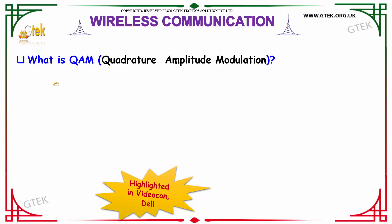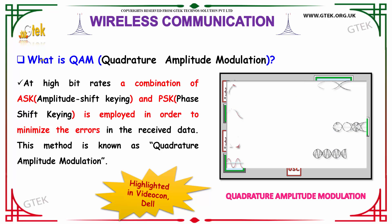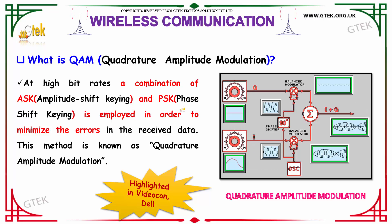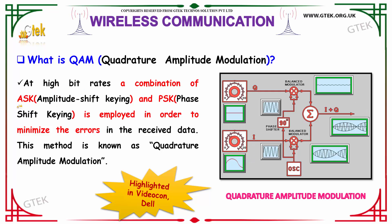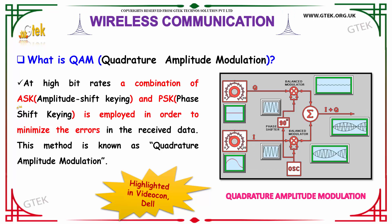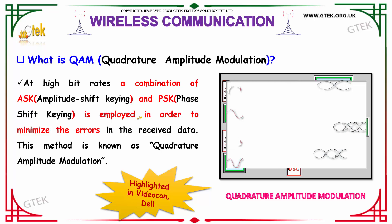What is QAM? QAM is abbreviated as Quadrature Amplitude Modulation. At a high bitrate, it is a combination of ASK and PSK. ASK is Amplitude Shift Key, whereas PSK is Phase Shift Key. At high bitrate, a combination of ASK and PSK is employed in order to minimize the errors in the received data. This kind of methodology and implementation is called as Quadrature Amplitude Modulation.